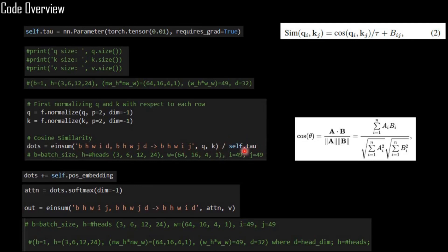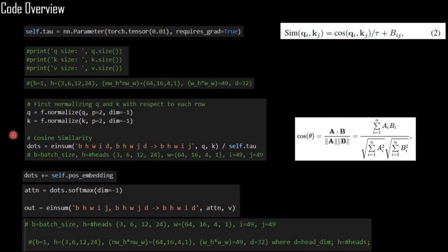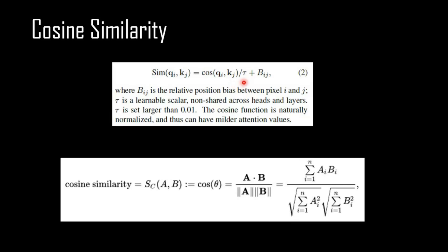After normalizing Q and K and computing the dot product, we divide by the tau value we defined — a learnable value. Then we add positional embedding as before, send it into the softmax, and multiply by the value. The rest is the same as dot product similarity; the only difference is this normalization and tau section.